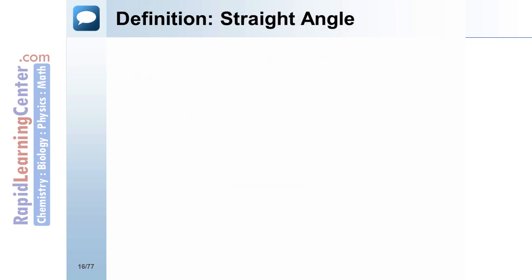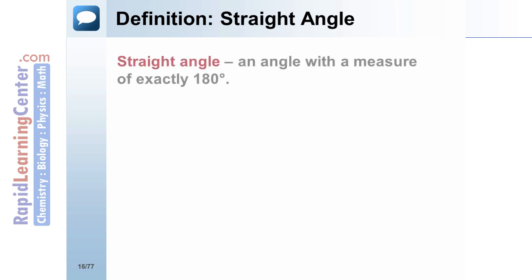Definition: Straight Angle. If the measure of an angle is exactly 180 degrees, it is called a straight angle. Angle ABC is a straight angle.